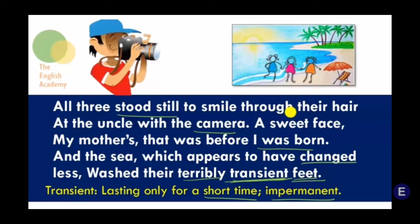The photograph shows that all three girls — the poet's mother and her two cousins — stood still and smiled at the camera when their uncle clicked the photograph at the sea beach. The weather was windy at the time, which is why all three stood still. Their hair was flying over their smiling faces. The expression on the faces of the poet's mother and her cousins was one of happiness and enjoyment. The mother was looking very pretty then. The photograph was taken a long time ago, and now everything has changed — her mother grew up and has since passed away. The only thing that has remained unchanged is the sea.